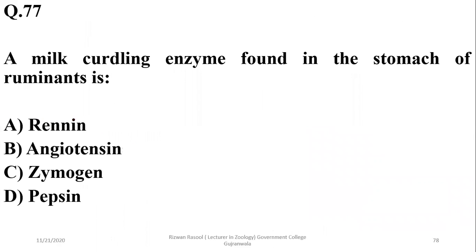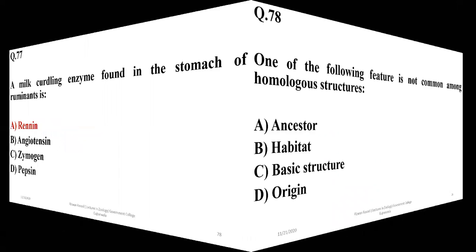A milk-curdling enzyme found in the stomach of ruminants is rennin — with double N. Don't confuse it with renin, another protein substance secreted by the kidneys, which is abbreviated with a single N. So the right option here is A.